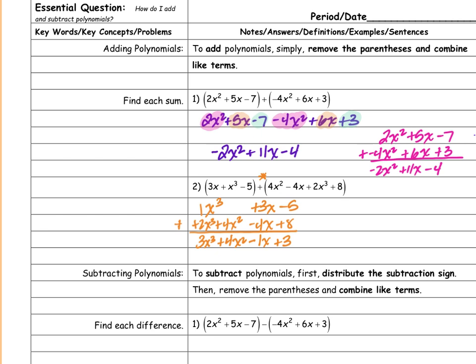Negative 5 plus 8 should be plus 3. So that's the vertical way. Or I could remove the parentheses and combine like terms horizontally — finding that 3x and negative 4x are like terms, x cubed and 2x cubed are like terms, negative 5 and 8 are like terms, and 4x squared stands alone. Writing from biggest to smallest exponent: x cubed plus 2x cubed gives 3x cubed, then 4x squared, then 3x minus 4x is negative x, and negative 5 plus 8 is plus 3.